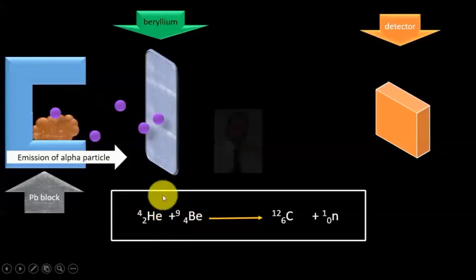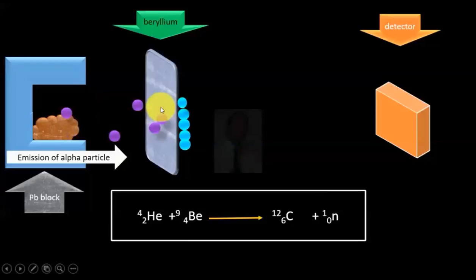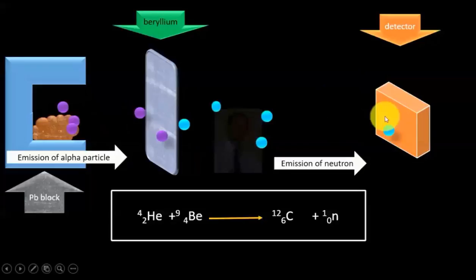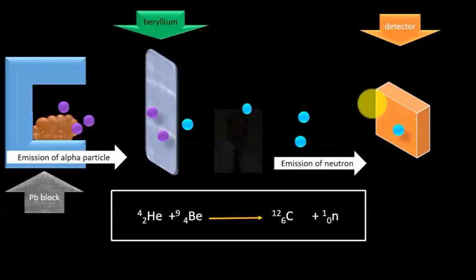Neutrons were being released and these neutrons were going towards the detector, but the detector could not detect these radiations because the detector was designed only to detect radiations of either positive or negative charges.